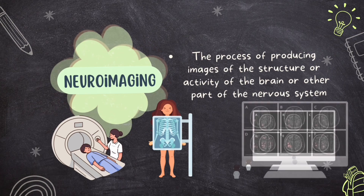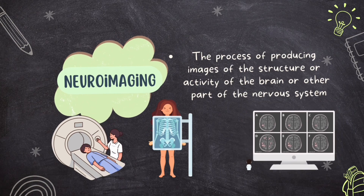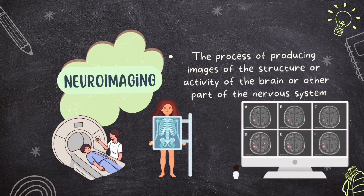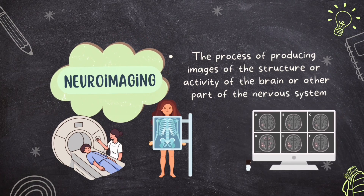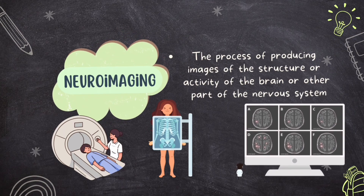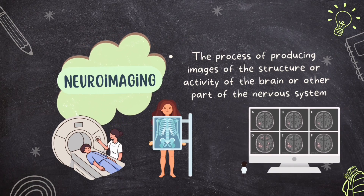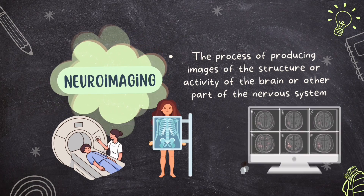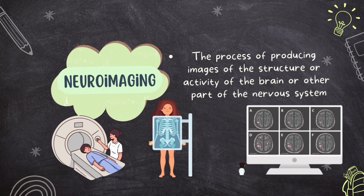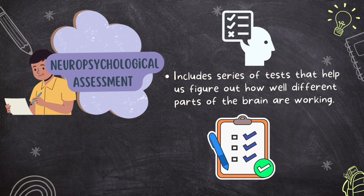PET scans show how the brain is working. A special injection lights up active parts of the brain — the brightest areas show the greatest activity during different tasks. Finally, fMRI — functional MRI — investigates changes in blood flow. Since active brain areas need more blood, fMRI helps us see which parts of the brain are active during tasks or thoughts. This is super helpful for understanding how the brain processes information and why it behaves the way it does.